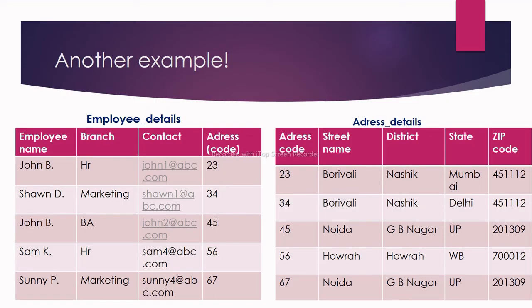In these two tables, I have given many fields and tried to assign an address using an ID code. If I ask you to find details of John B from the employee details table, there will be two results in the output, and similar cases will arise for other fields as well. However, if I ask you to find details of ID 23, you can retrieve the data uniquely, and it also establishes the relation between the two tables.